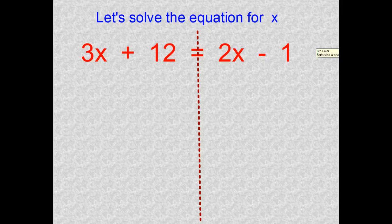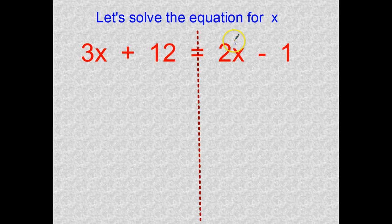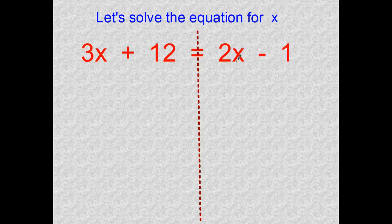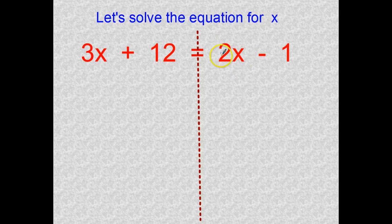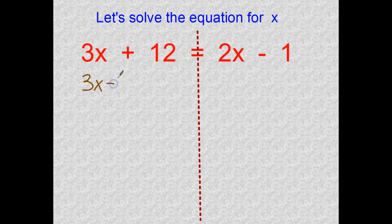In math, when you take a term and bring it to the other side, a simple operation occurs — you just change the sign of that term. I've chosen to bring the 2X over to the left, so 2X becomes negative 2X. You never want to empty one side of the equation, so always keep at least one term on each side of the equal sign. The 12 and negative 1 stay where they are.